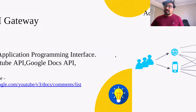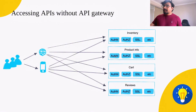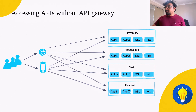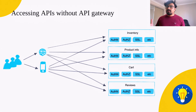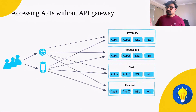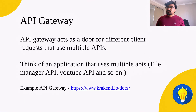Before introducing the API gateway, here's how you can access a bunch of APIs directly. We have an Inventory API and a Product Info API, and mobile clients and web clients can access these APIs directly without going through an API gateway. Now let's see where the API gateway comes into play.